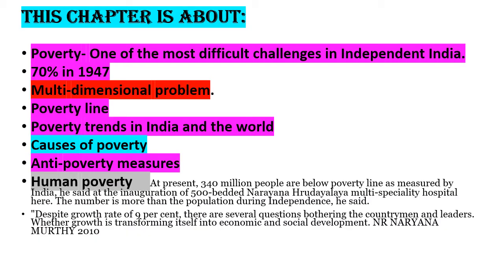This chapter is about the following things. We will learn poverty as one of the most difficult challenges in independent India. That is why the former Prime Minister of India, Mrs. Indira Gandhi, had declared eliminating poverty as one of our goals. We will also learn that poverty is a multi-dimensional problem — meaning it is related to so many other issues like landlessness, not getting enough nutritious food to eat, homelessness, and not being able to send children to school. In this way, poverty is related to many other issues, so it is a multi-dimensional issue.